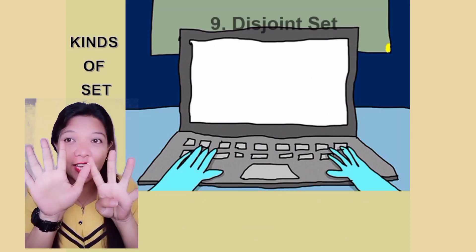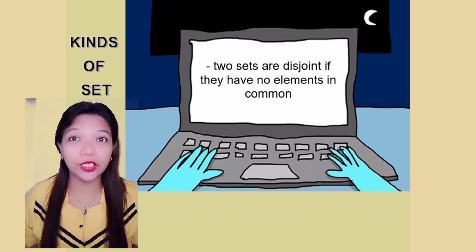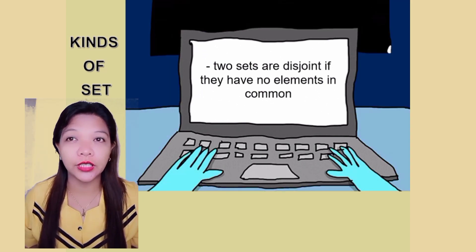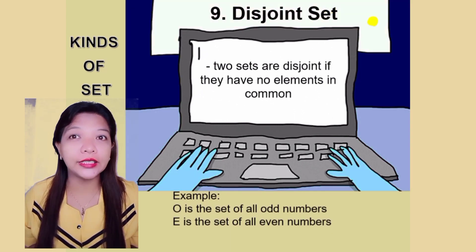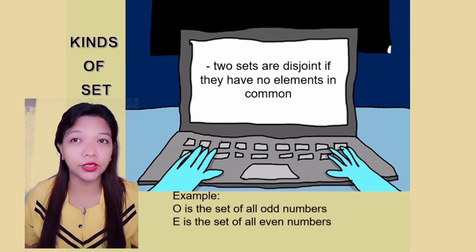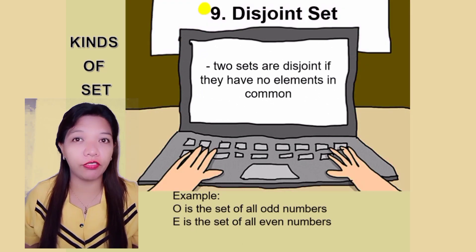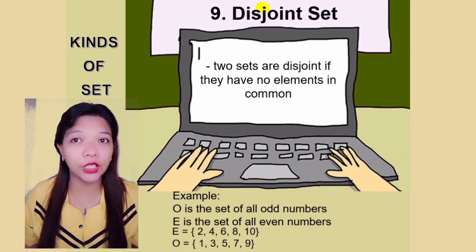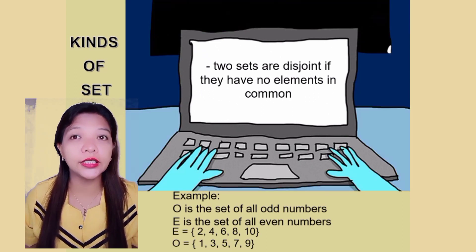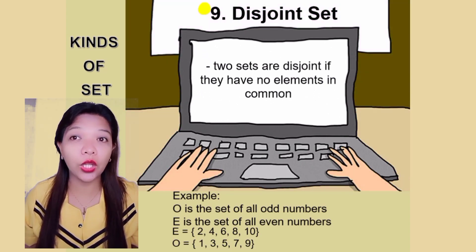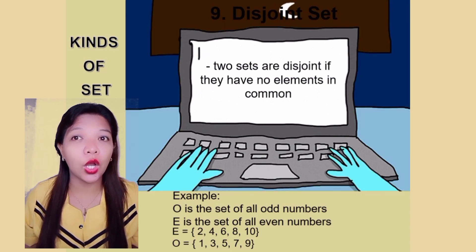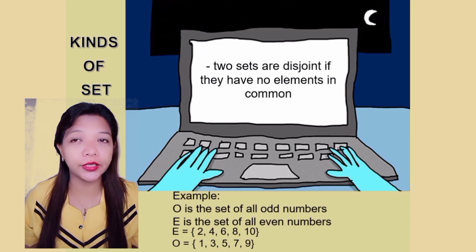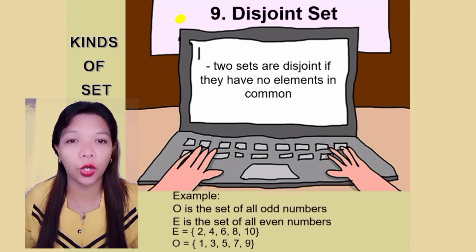Number 9. Disjoint set. Two sets are disjoined if they have no elements in common. Example, O is the set of all odd numbers. Set E is the set of all even numbers. Set E is equal to open brace 2, 4, 6, 8, 10, close brace. Set O is equal to open brace 1, 3, 5, 7, 9, close brace. There are no elements in common.